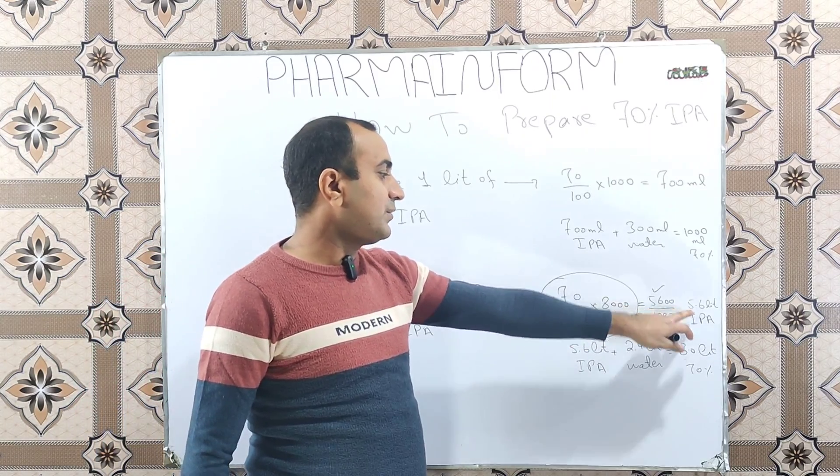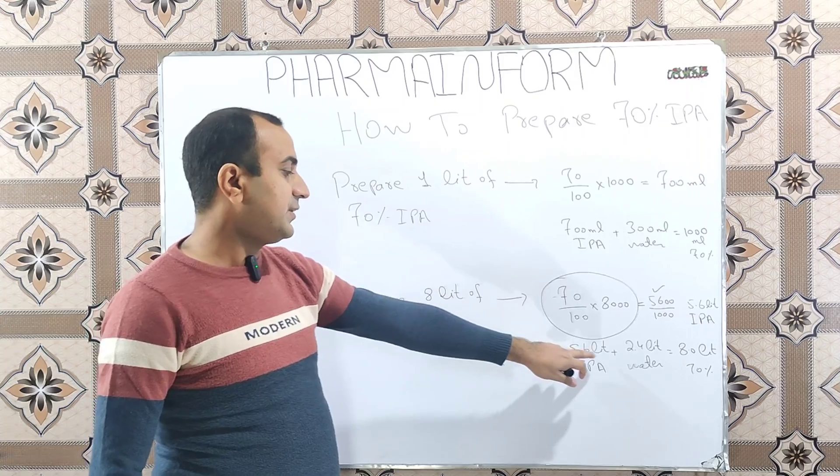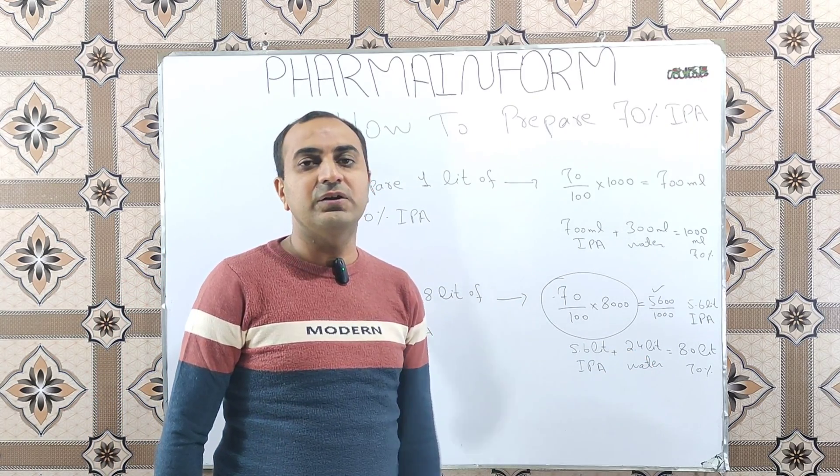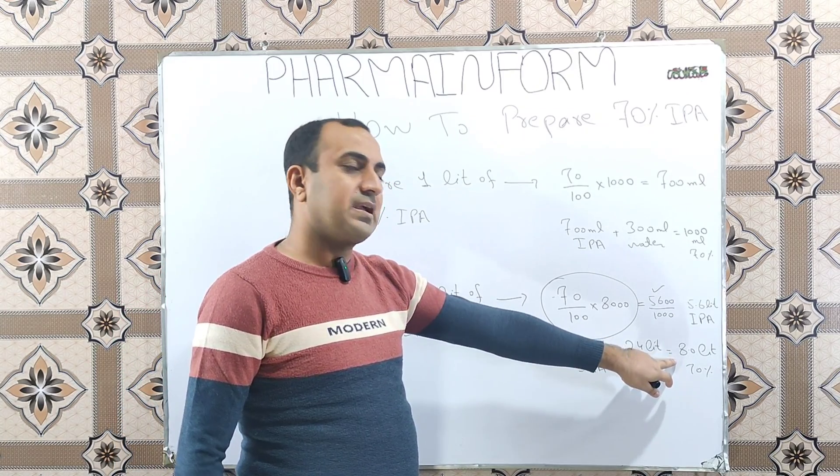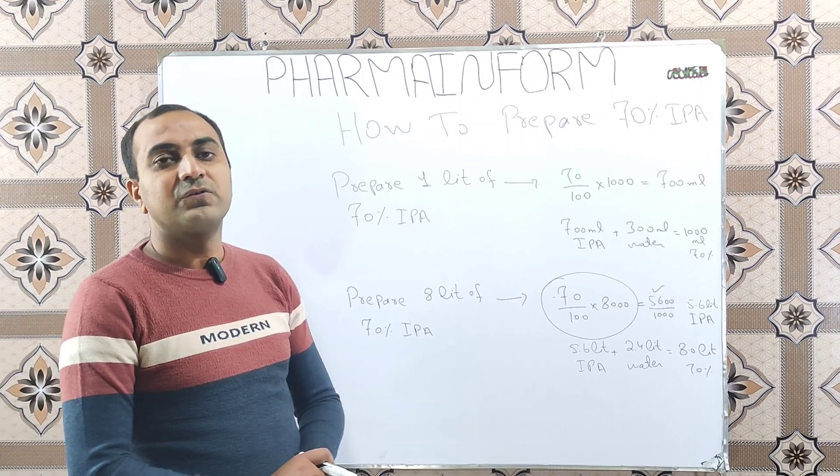So, 8 minus 5.6, the answer is 2.4. So we will take 5.6 liters of IPA and 2.4 liters of water, total volume will be 8 liter and it will be 70% solution.